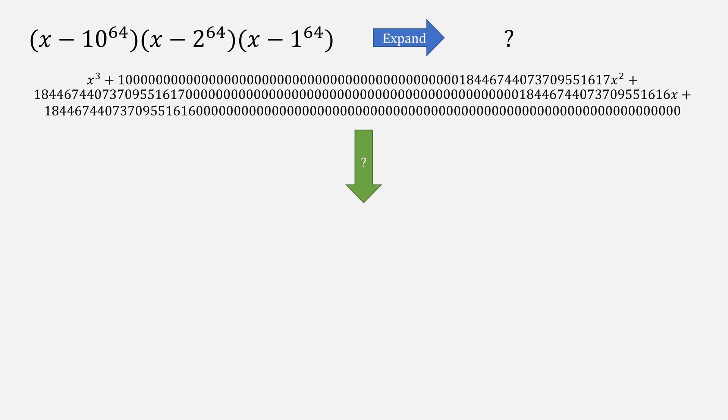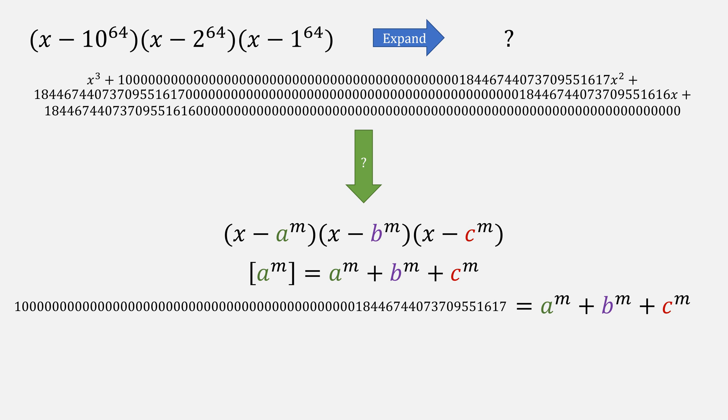What if you wanted to start with that polynomial and go backwards to figure out its roots? We'll use our a^m bracket notation, meaning [a^m] is a^m + b^m + c^m, giving that large number. And we had this property that a's magnitude was much larger than our other two, meaning that when m is large, a^m is much much larger than b or c combined.